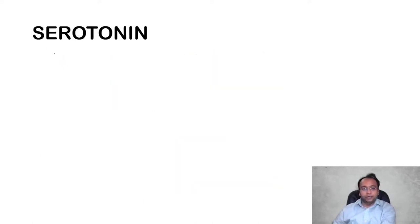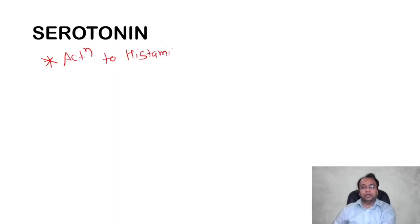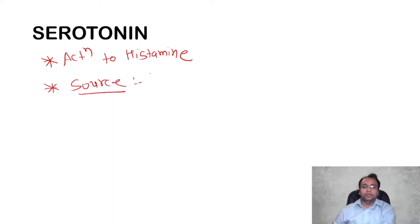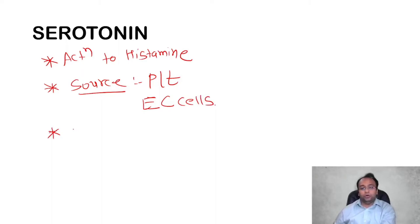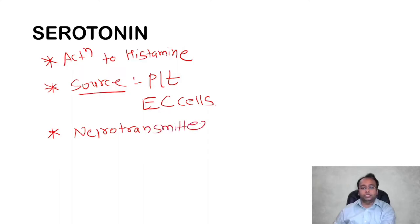Serotonin has similar actions to histamine and is also a preformed cell-derived mediator. The main source of production is platelets. It is also present in enterochromaffin cells of the body, and it is one of the neurotransmitters in the gastrointestinal tract.